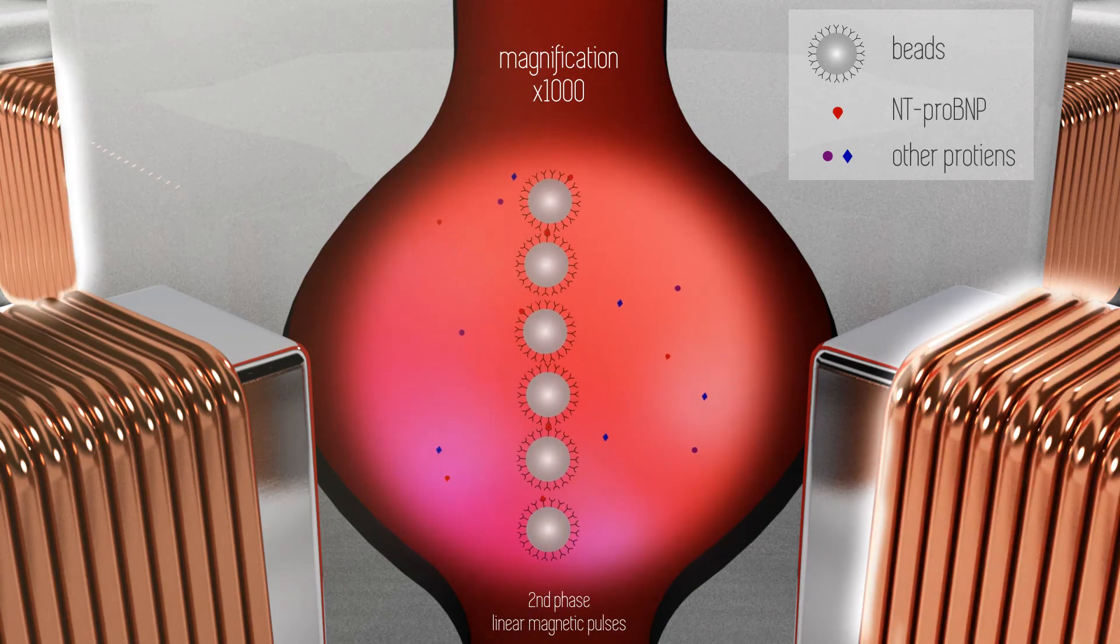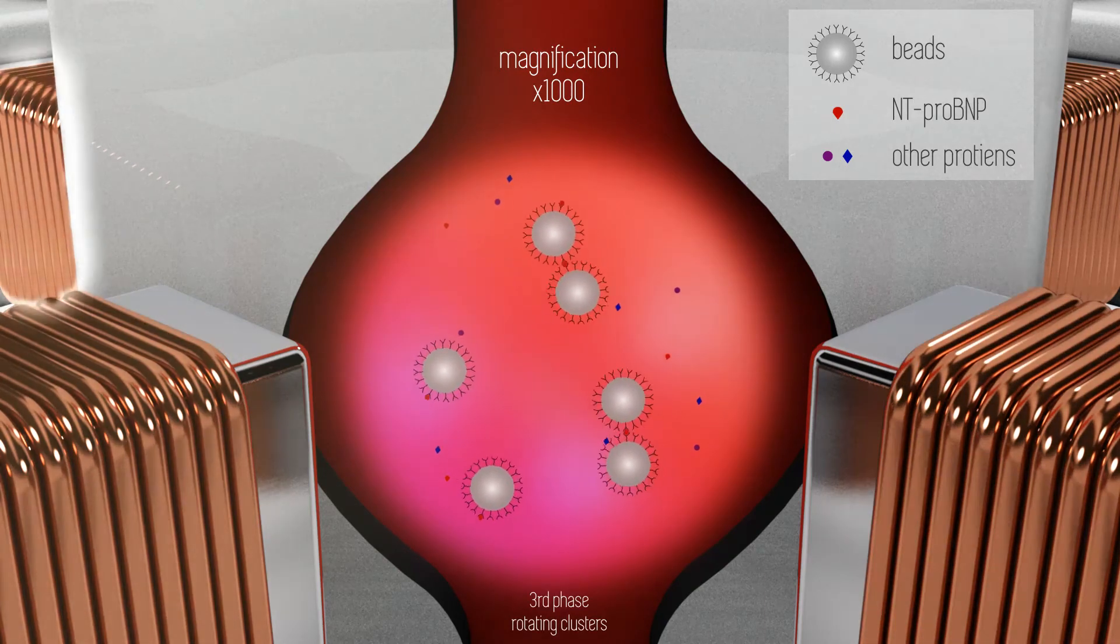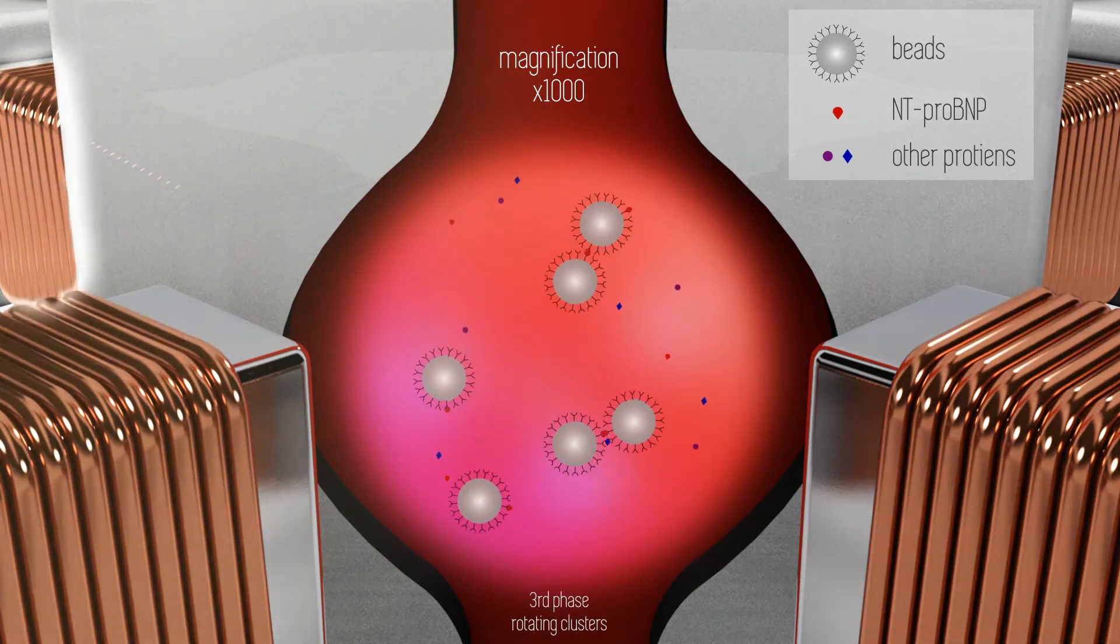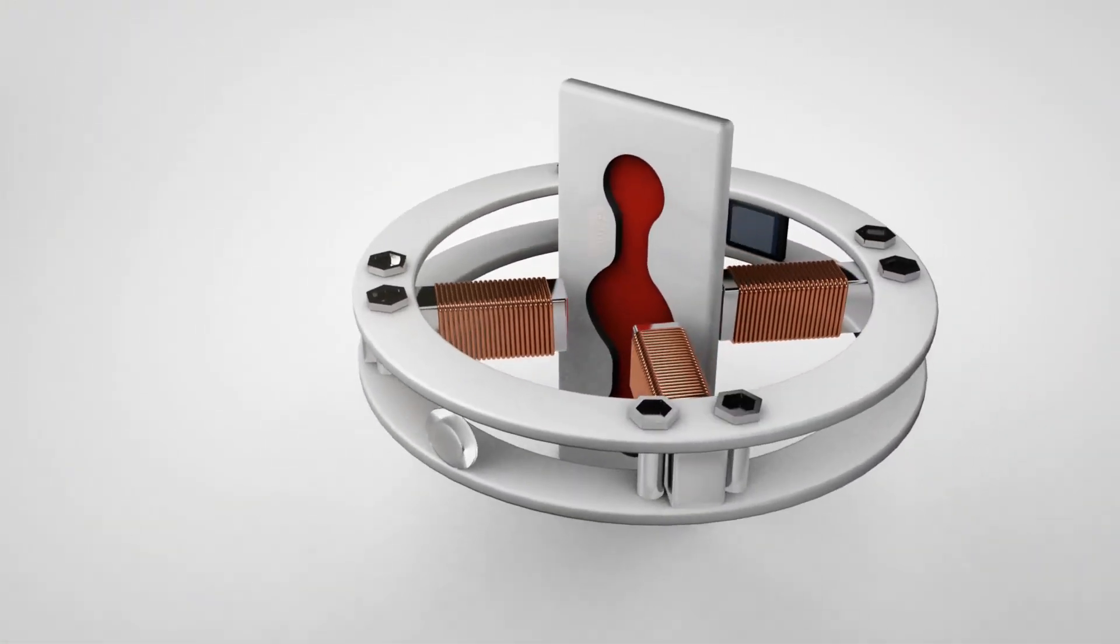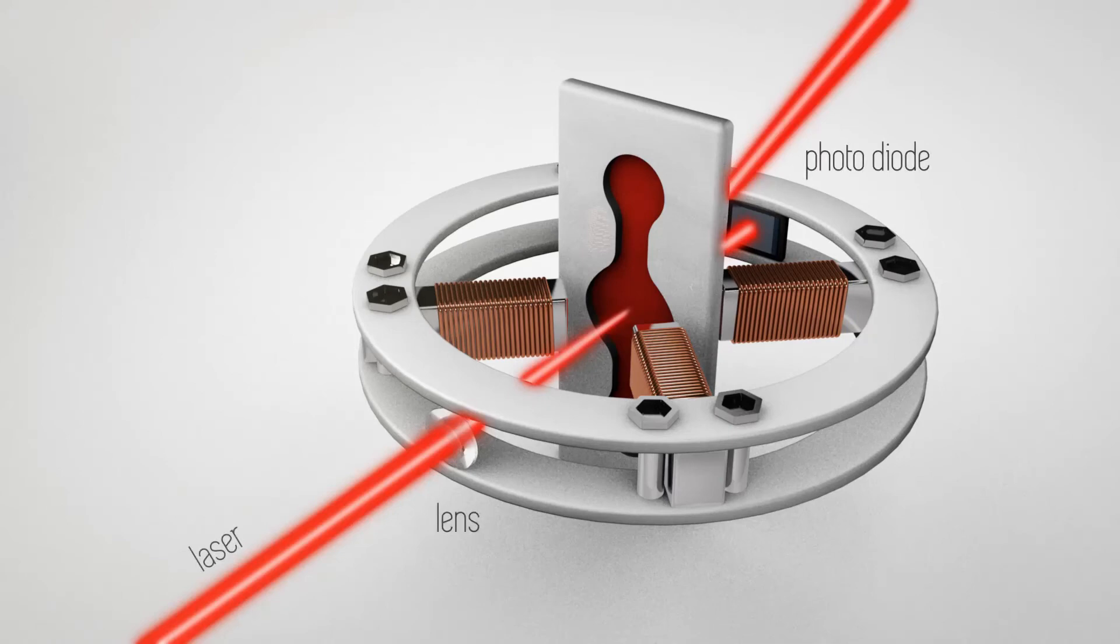In the third phase, the formed clusters are rotated and a signal is recorded using a laser. The laser is focused in the sample and measures the scattering of the magnetic particles at a shallow angle. The rotating clusters cause a time-varying scatter intensity, which is a measure for the number of clusters and thus the concentration of biomarker.